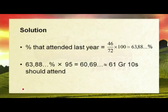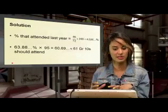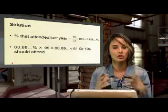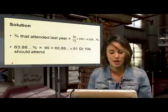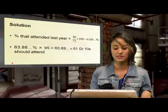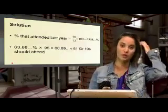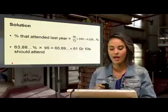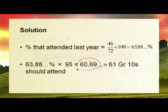So if that same percentage attended this year with 95 children, we take 63.88% multiplied by 95 and we get the answer of 61 learners expected to attend the dance.